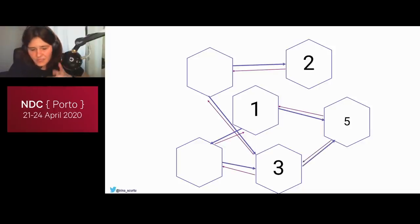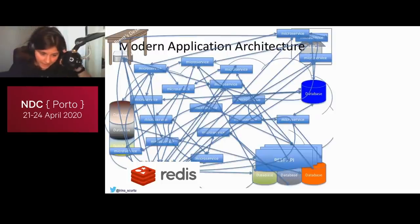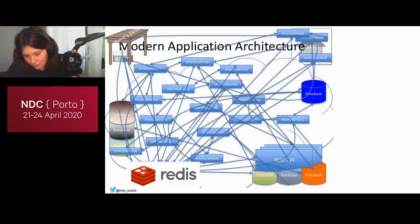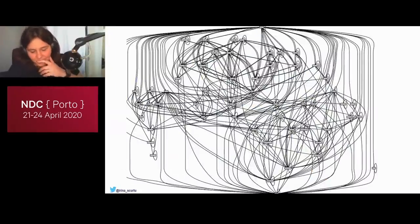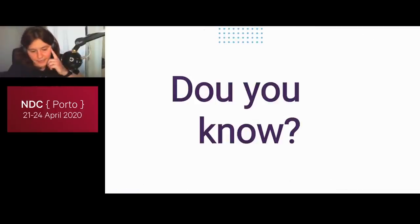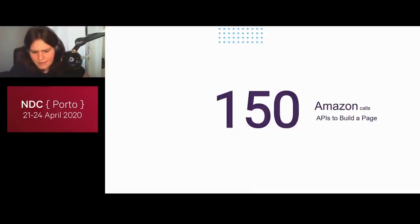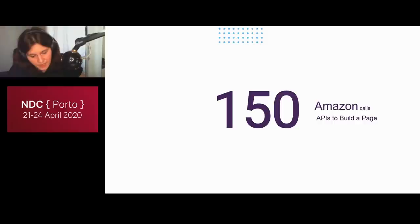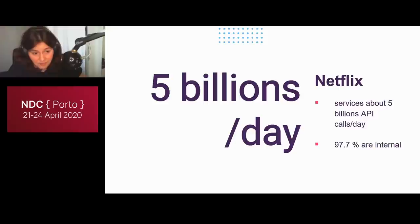You end up with a modern architecture: independent units that are scalable with their own database, REST APIs, and so on. You soon realize your monolithic life as a developer was very nice and cozy — you had no problems. But if you look around in the industry, you see that Amazon makes 150 API calls to build a single page. Imagine how many microservices they have. And Netflix has like 5 billion API calls per day, of which 97.7% are internal — inter-service communication.